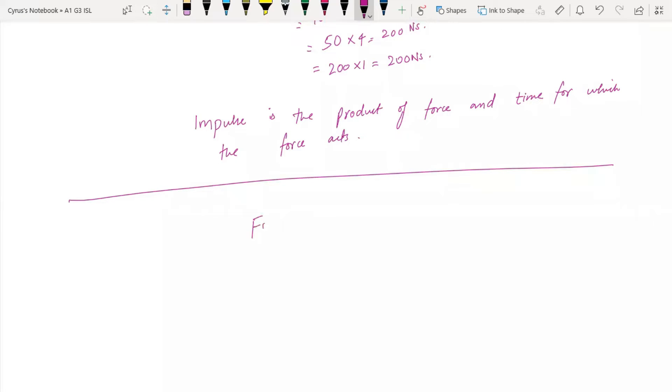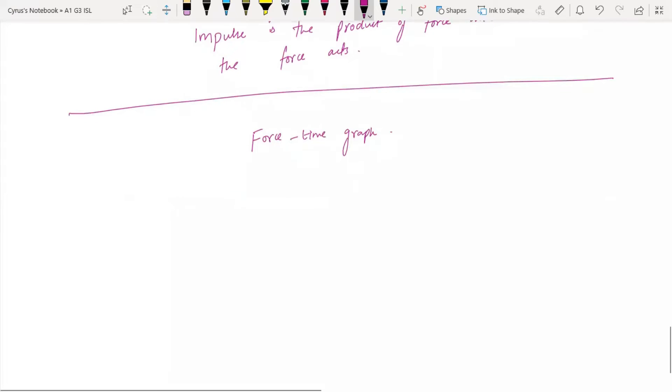If we have a force-time graph, the area under the force-time graph will give us impulse. For example, we have a graph here which is a force-time graph. You should know that the area under this graph is going to give you the force and time. Here on the x-axis, we have a curve like this, and you should know that the area under this graph...